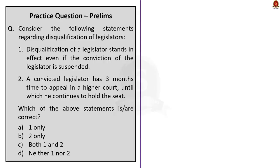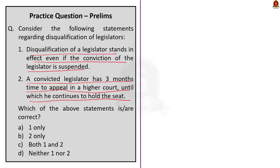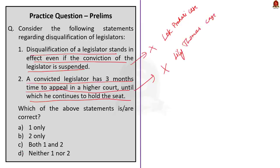Question 2: Consider the following statements regarding the disqualification of legislators. Statement 1: Disqualification of a legislator stands in effect even if the conviction of the legislator is suspended. Statement 2: A convicted legislator has three months' time to appeal in a higher court, until which he continues to hold the seat. Statement 1 is incorrect — the Supreme Court in the 2018 Lok Prahari case said that on appeal, if the conviction is suspended, then the disqualification will also remain suspended. Statement 2 is also incorrect — in the Lily Thomas case, the court struck down this provision. So the correct answer is option D, neither one nor two.